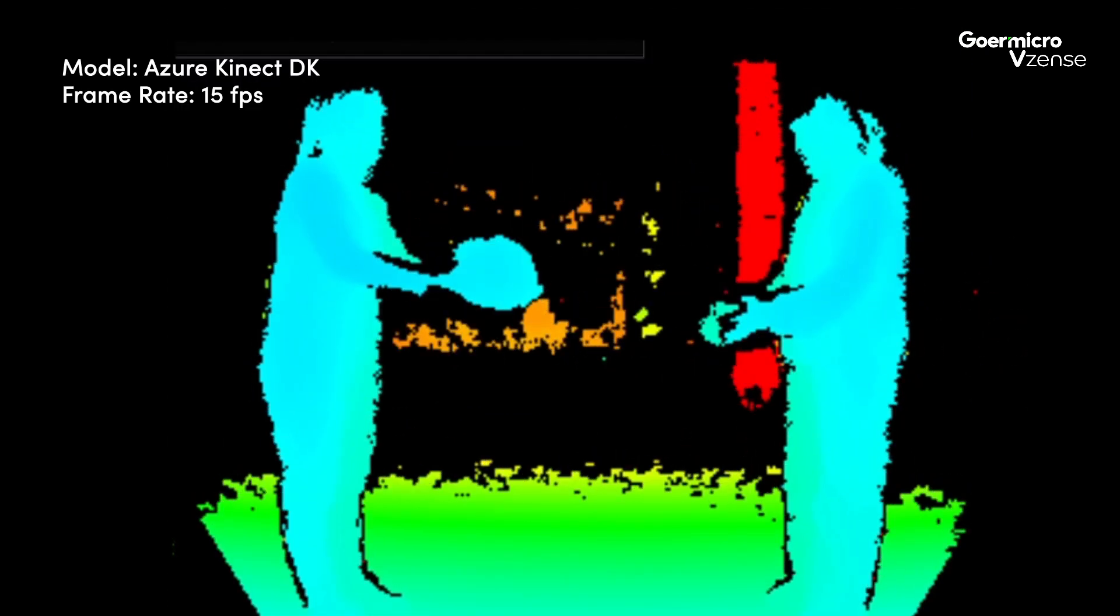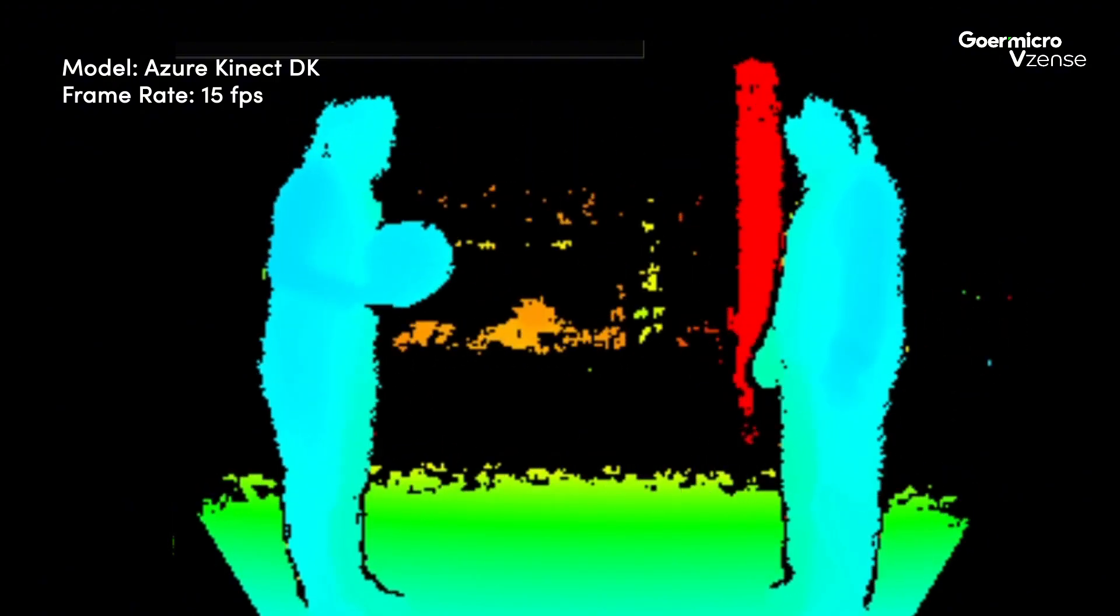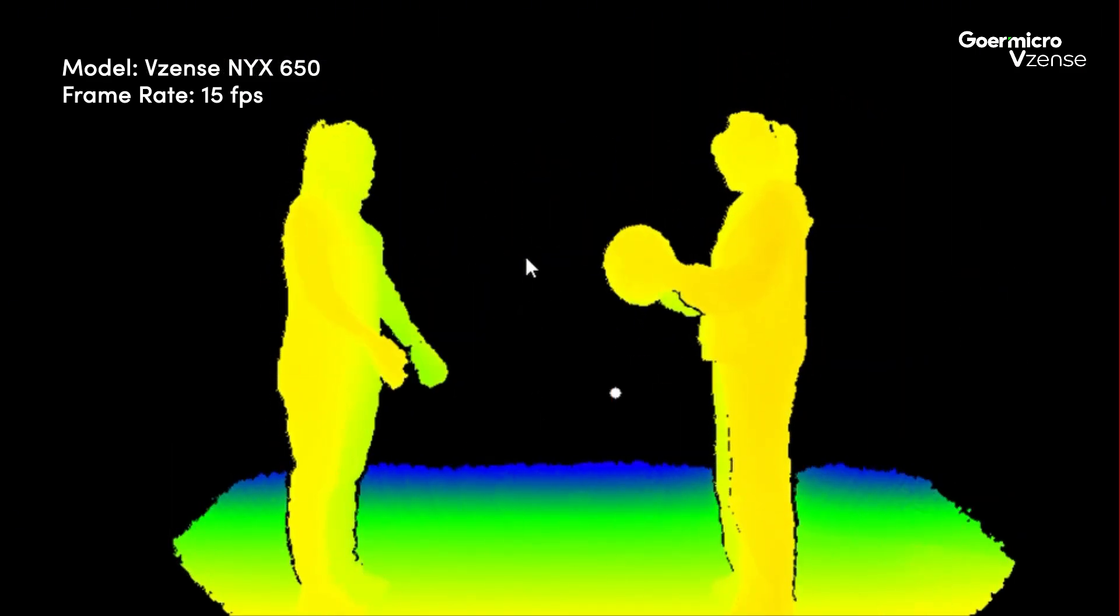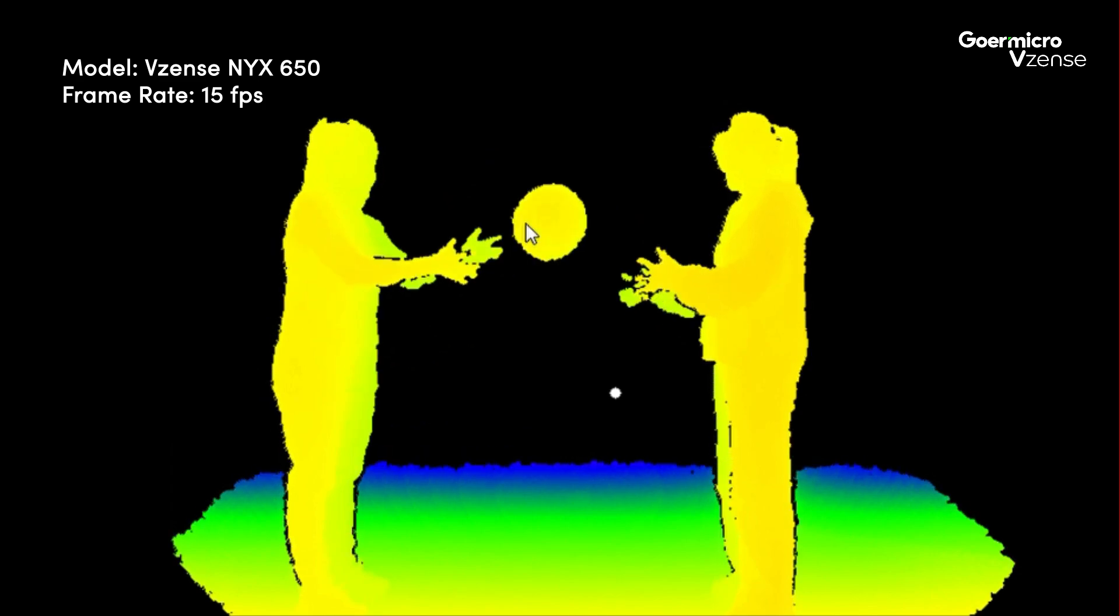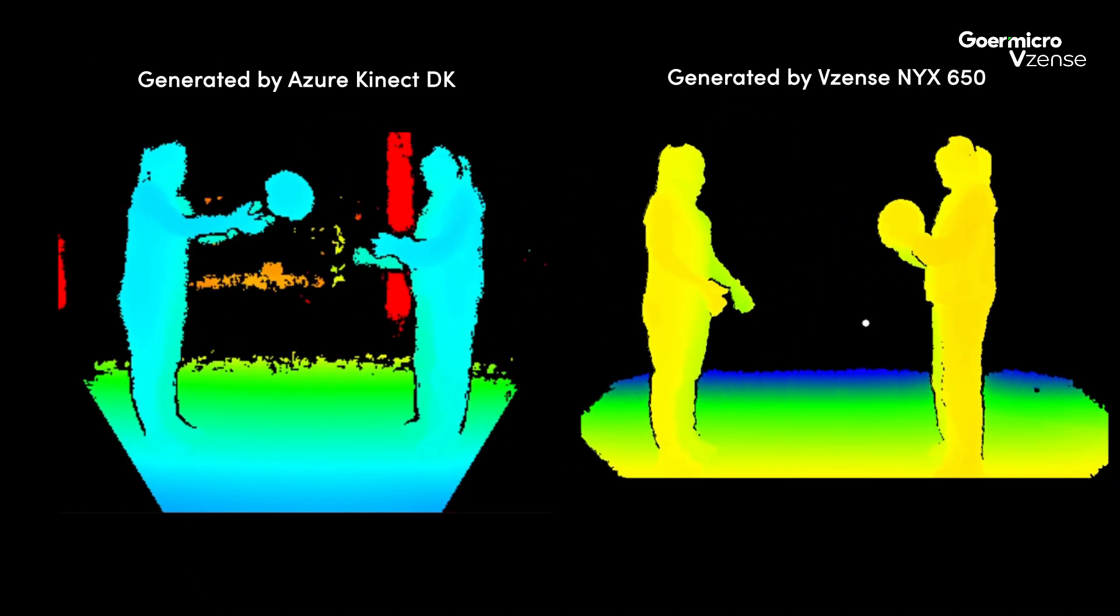The depth map generated by the Kinect showed deformation of the basketball during the passing action. In contrast, the NYX depth map displayed no deformation of the basketball and no noticeable motion blur. Comparing them side by side makes the differences more apparent.